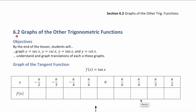Welcome to the video for section 6.2, Graphs of Other Trigonometric Functions. By the end of the lesson, you'll be expected to graph secant of x, cosecant, tangent, and cotangent. You'll also be expected to understand and graph translations of each of these functions.